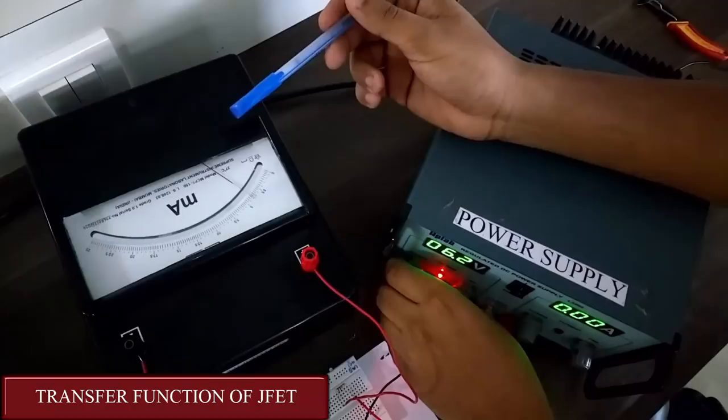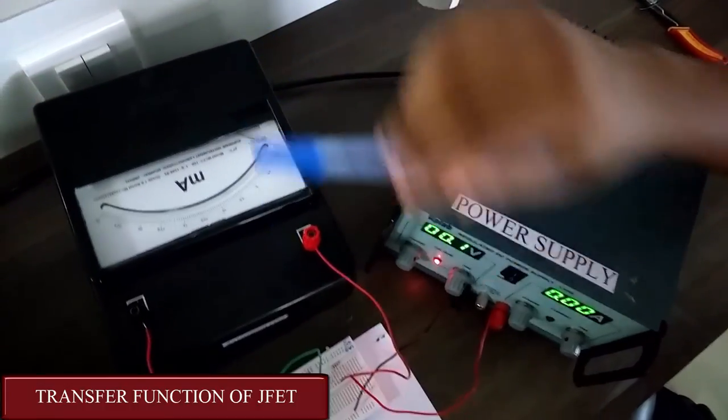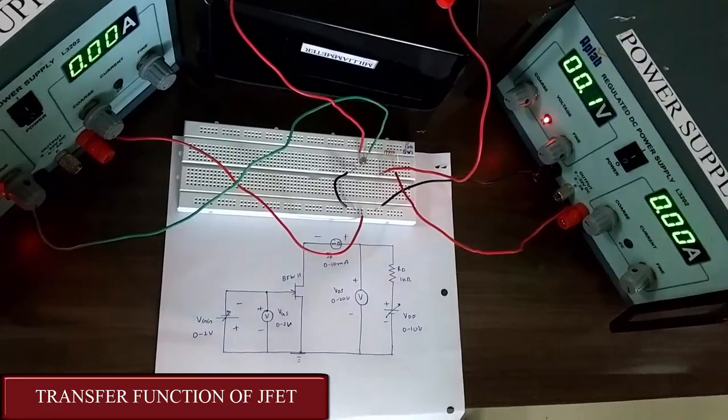So this is how we are going to plot the input-output characteristic. That's it for the transfer function. Thanks for watching.